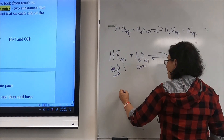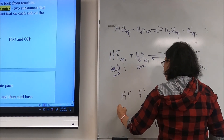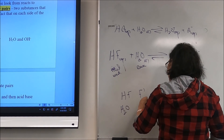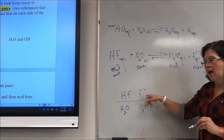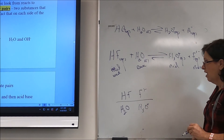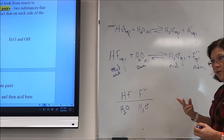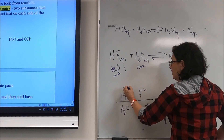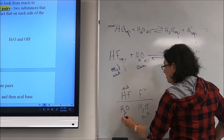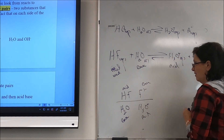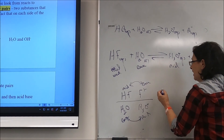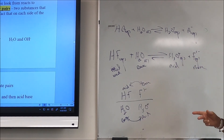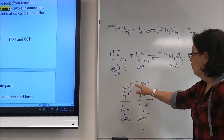Looking at HF and F⁻, and H₂O and H₃O⁺ — HF and F⁻ differ by one hydrogen ion, and water and hydronium differ by one hydrogen ion. HF is an acid and F⁻ is its base; water is a base and H₃O⁺ is its acid. These are called acid-base conjugate pairs — a conjugate pair is two substances that differ from each other by one hydrogen ion.